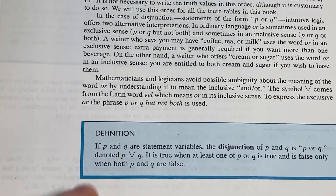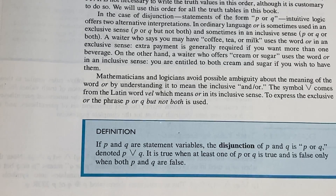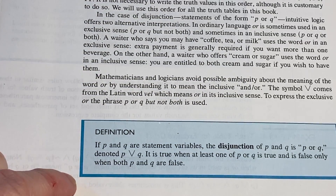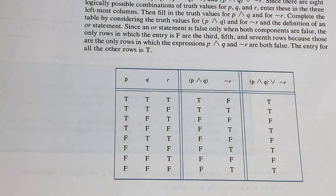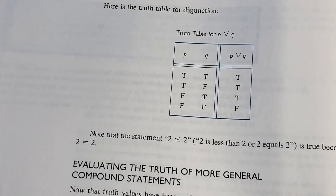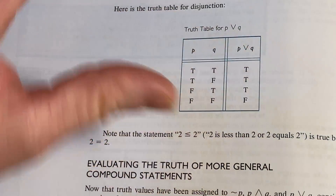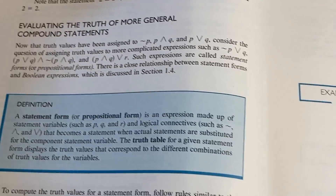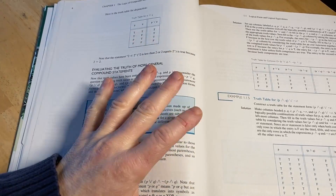Then we have the disjunction, which is the 'or.' If P and Q are statement variables, the disjunction of P and Q is P or Q, denoted P or Q. It is true when at least one of P or Q is true, and it is false only when both are false. So the only time it's false is when they're both false; otherwise it's true. This stuff is really important — I kind of emphasize how key this is for mathematics and for high-level math. Very foundational, very important.